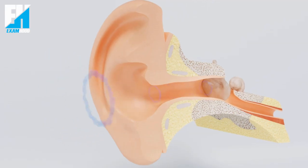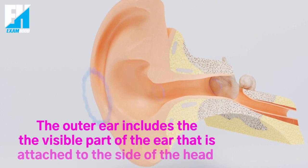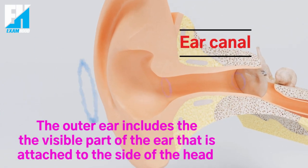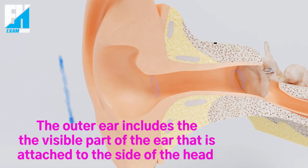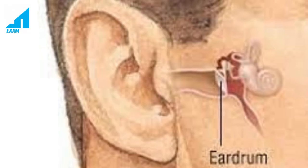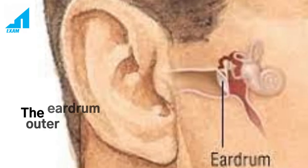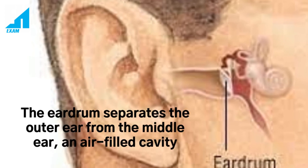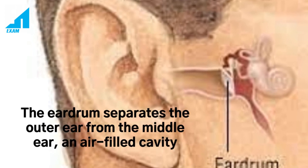The outer ear includes the visible part of the ear that is attached to the side of the head and the ear canal. The eardrum separates the outer ear from the middle ear, an air-filled cavity.